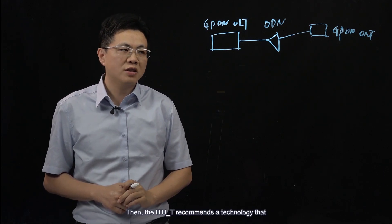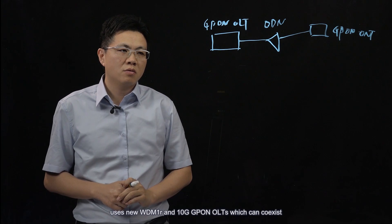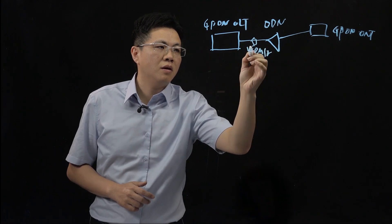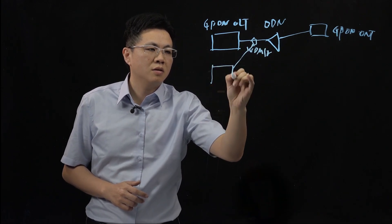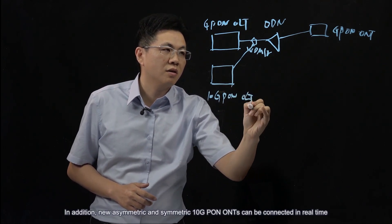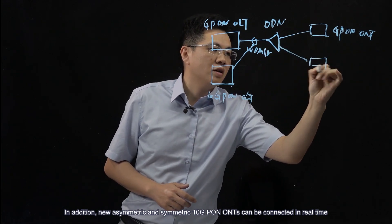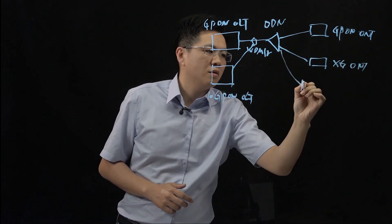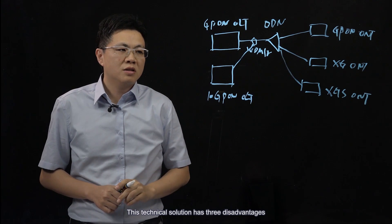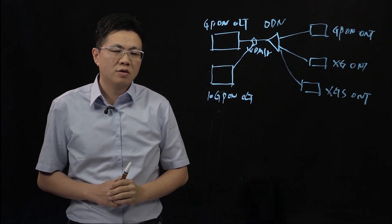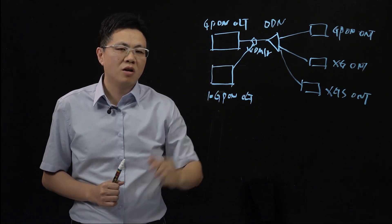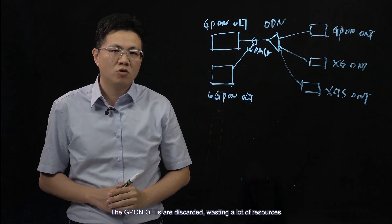Then, the ITU-T recommends a technology that uses new WDM-1R and 10G GPON OLTs, which can co-exist. New asymmetric and symmetric 10G PON ONTs can also be connected in real time. However, this technical solution has three disadvantages. First, new 10G PON OLTs are introduced to replace GPON OLTs, and the GPON OLTs are discarded, wasting a lot of resources.